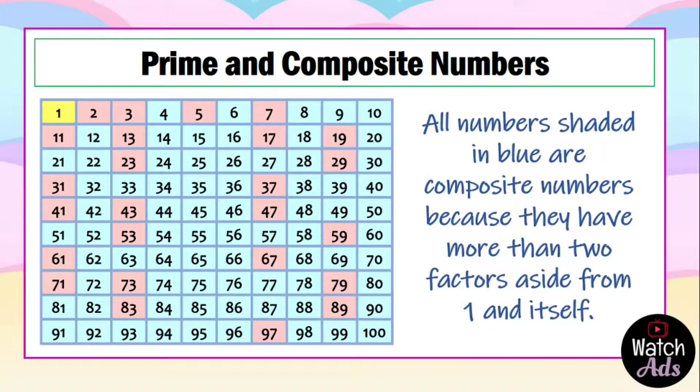All numbers shaded in blue are composite numbers because they have more than two factors aside from 1 and itself. If you are going to ask me how can you identify which of the numbers from 1 to 100 are prime and which are composite, the first thing you have to do is familiarize with the prime numbers from 1 to 100. Then all else are composite numbers. Another thing is there are clues and hidden hints to identify if a number is composite.